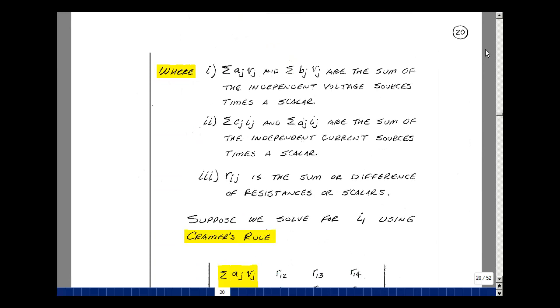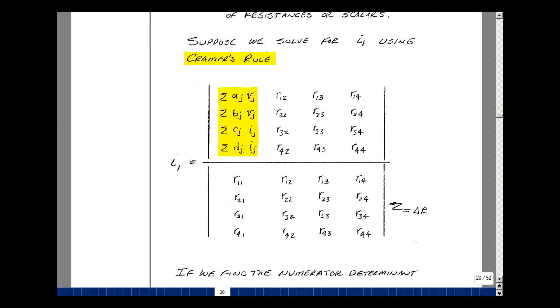Now suppose that we solve for the current I1 using Cramer's rule. We take our equations on the previous page, which is our matrix relating the mesh currents to our sources, and that's our R matrix. I'll call the determinant of that delta R. And then in the numerator, solving for I1, we take that same matrix, but take the column associated with I1, which is the first column, and replace it by the left-hand side of the equation.